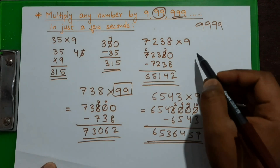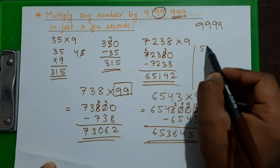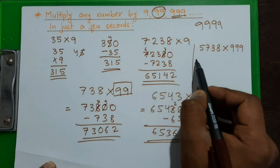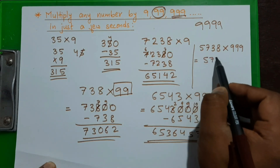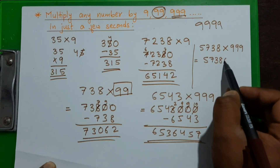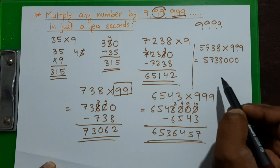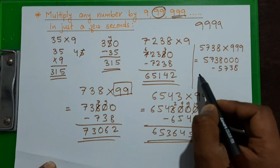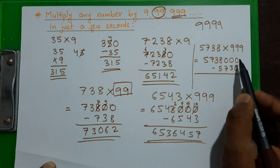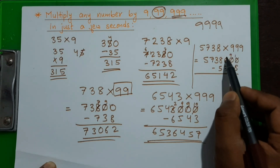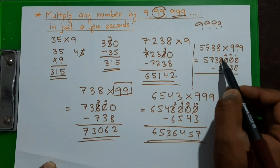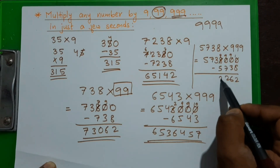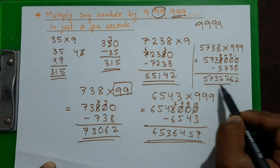Let's do one more calculation. Take the number 5738 and multiply it by 999. First step: multiply by 1000, putting three zeros behind the number. Then subtract the original number 5738 — written as 8375 in reverse. Borrowing as needed: 10 minus 8 is 2, 9 minus 3 is 6, 9 minus 7 is 2, 7 minus 5 is 2, giving us 5732262.